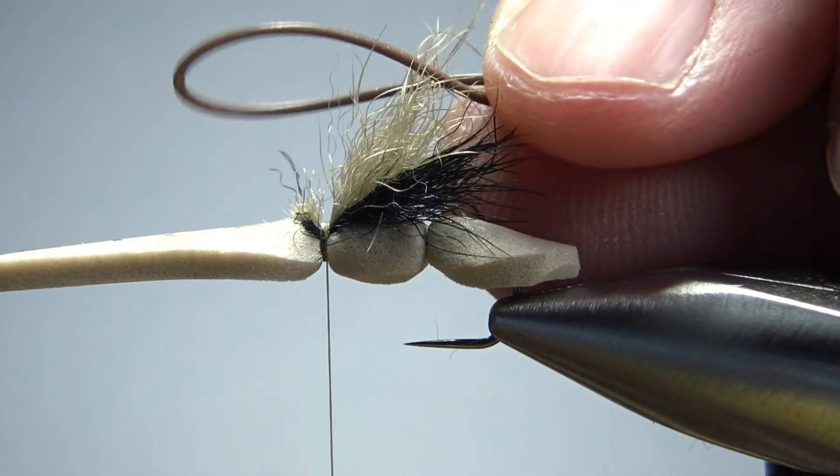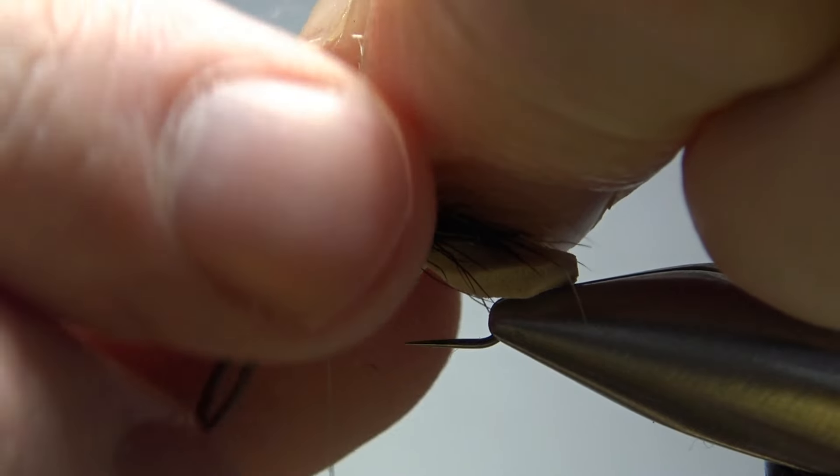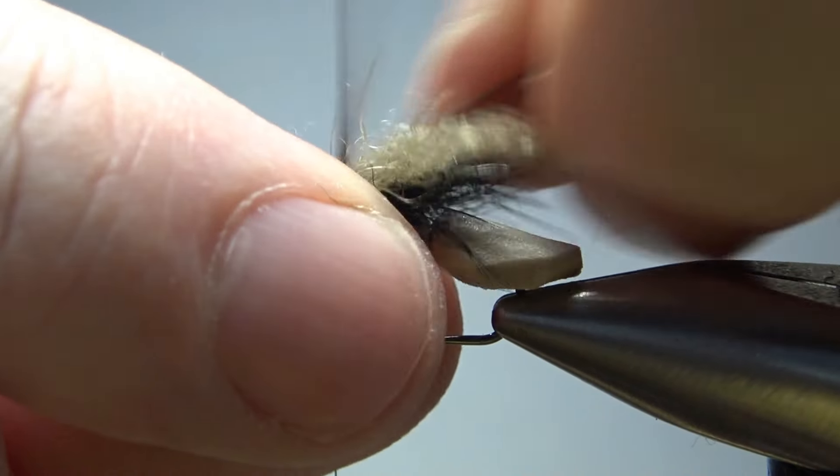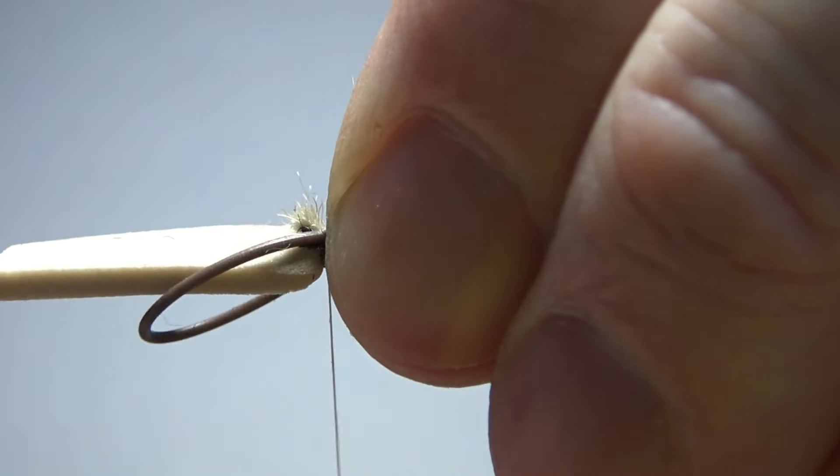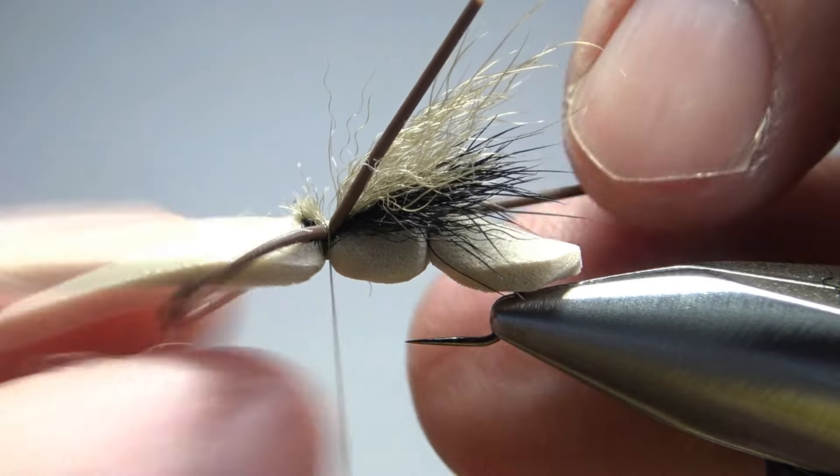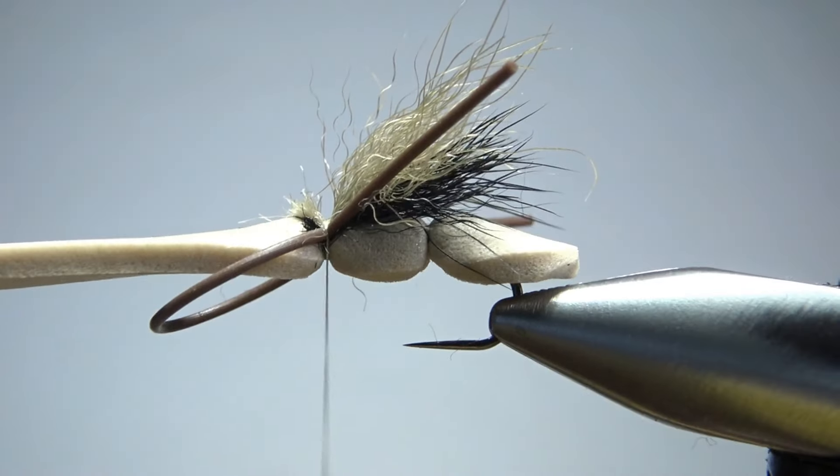Now we do have some legs on this thing. I'm just going with a little brown rubber. Got it folded over. This may be a two inch piece right here. I'm just going to kind of lay it on the side and do two really loose wraps so I can position it so they're both coming off the sides okay. And that's probably close enough. All right, I think we're fine there.